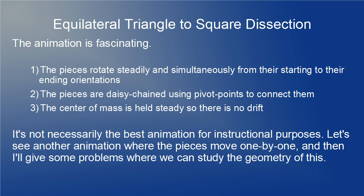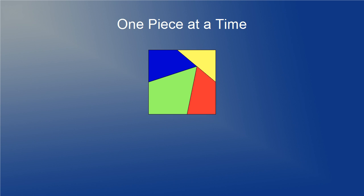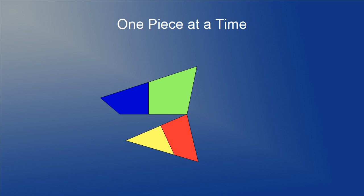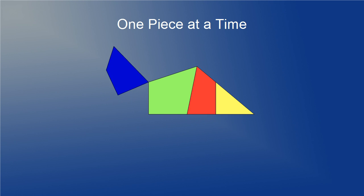Unfortunately, it's not necessarily the best animation for instructional purposes, so let's look at a different animation where the pieces move one by one. In this animation, you can more clearly see the unfolding of the top pieces down to line up with the bottom pieces, and then swing around underneath to complete the triangle.